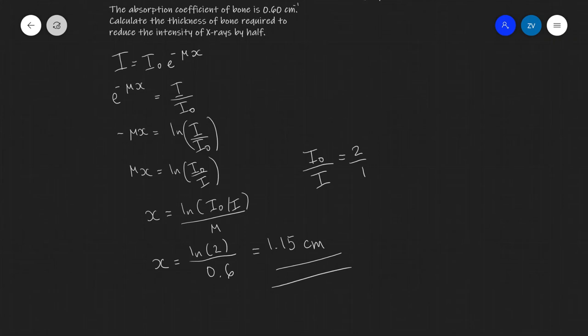So after 1.15 centimeters the intensity of x-rays when they go through bone are going to decrease by a factor of a half. Okay folks, well hopefully this video was useful. Thanks very much for watching and I shall see you in the next medical physics video.